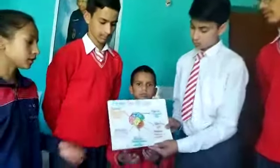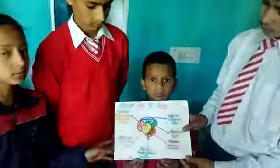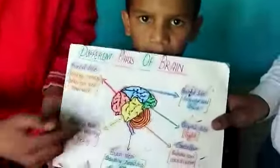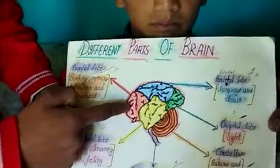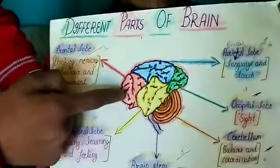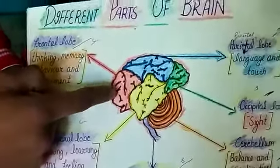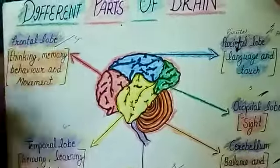Dear friends, this is the structure of the brain. The first part is the frontal lobe. Thinking, memory, behavior, and movement are controlled by the frontal lobe.